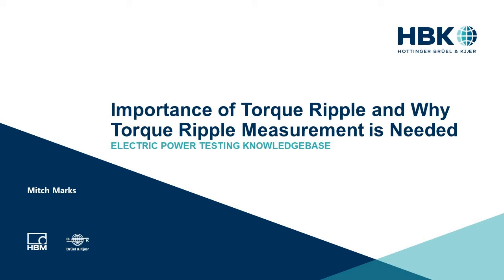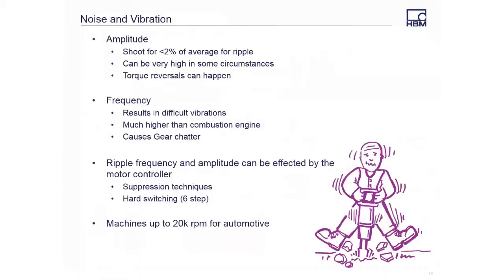Why do we care about torque ripple? This might be the most important part. Noise and vibration is a really big part of why we care about torque ripple. The first element we care about is probably the amplitude — we want to shoot for less than 2% of the average for the ripple. That's a rule of thumb. Some people say 1%, but we'll go with 2%. So on 100 newton meter average torque, this would be a ripple of 2 newton meters.